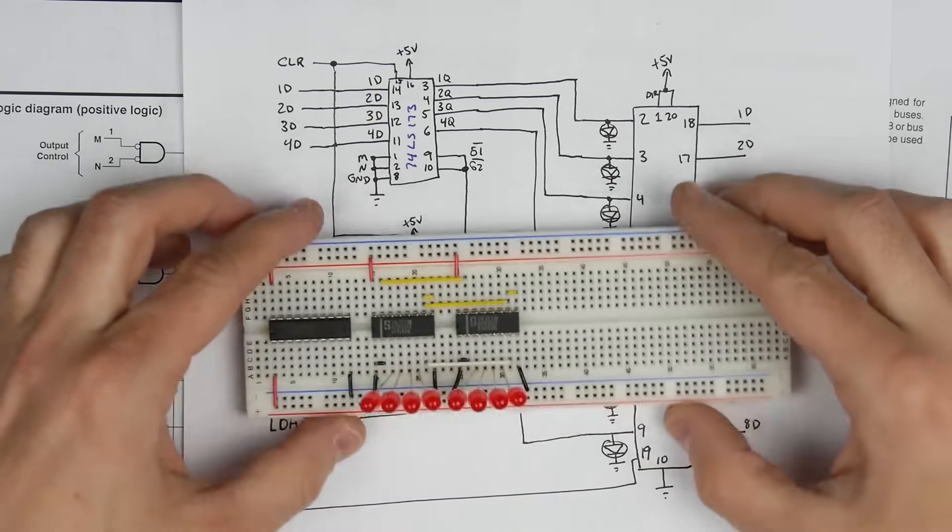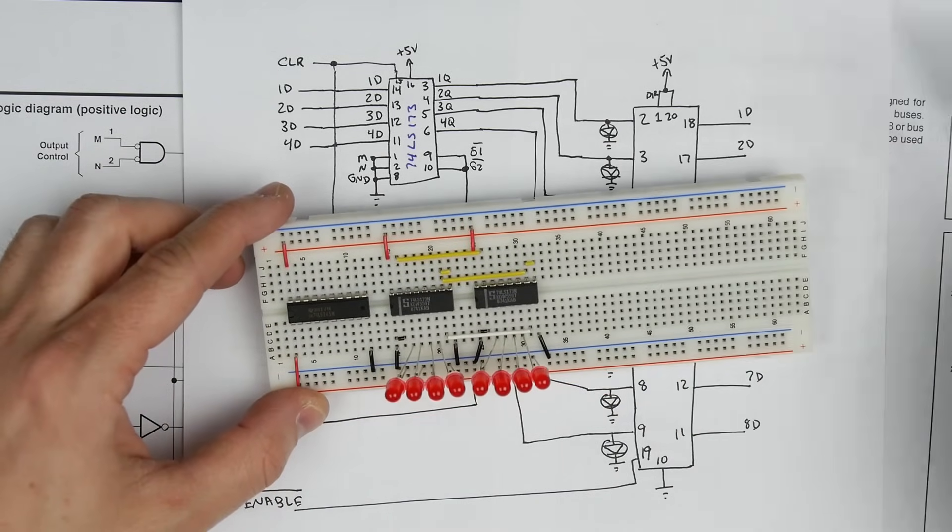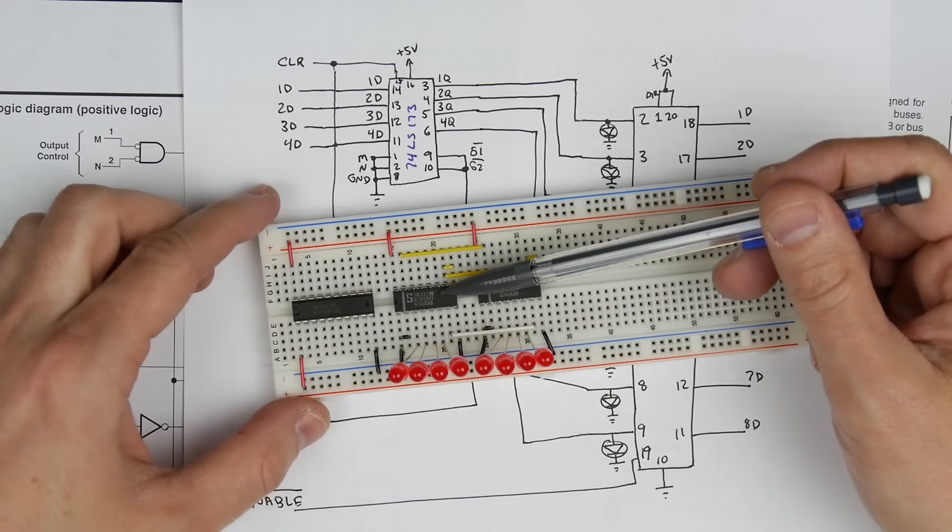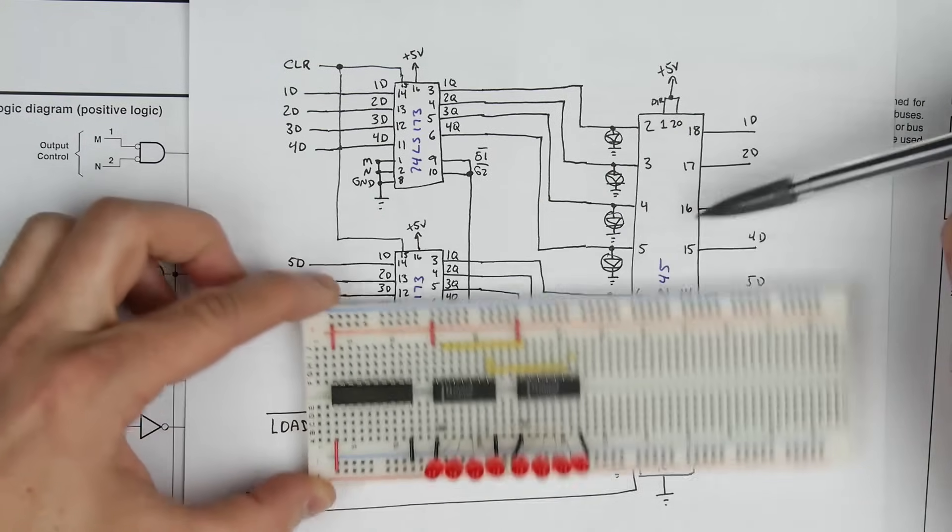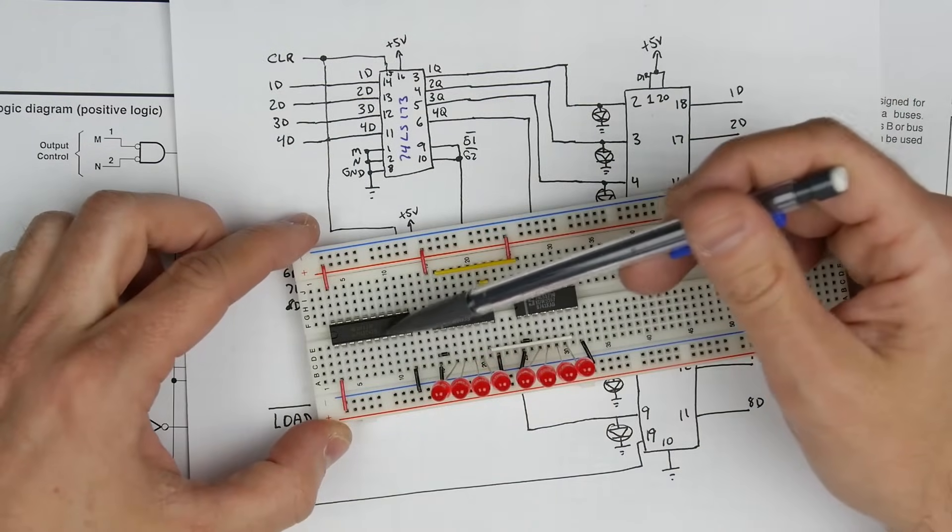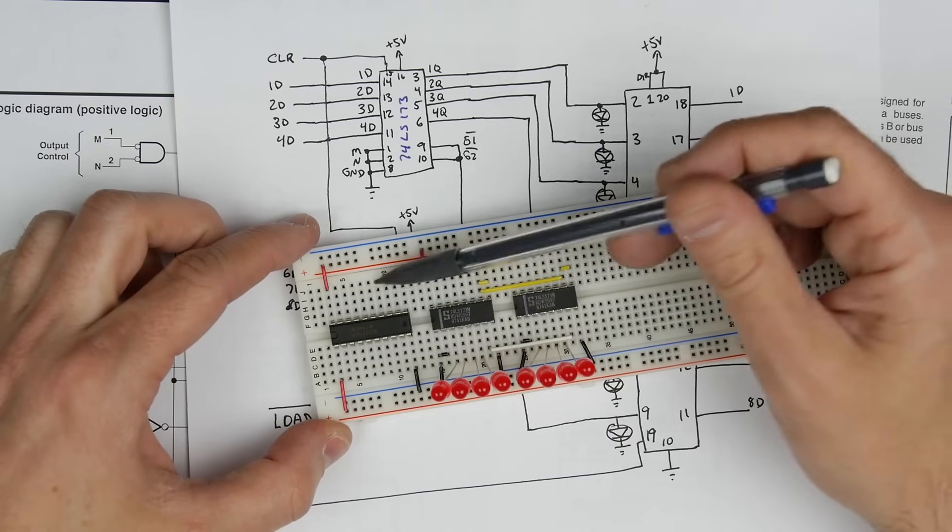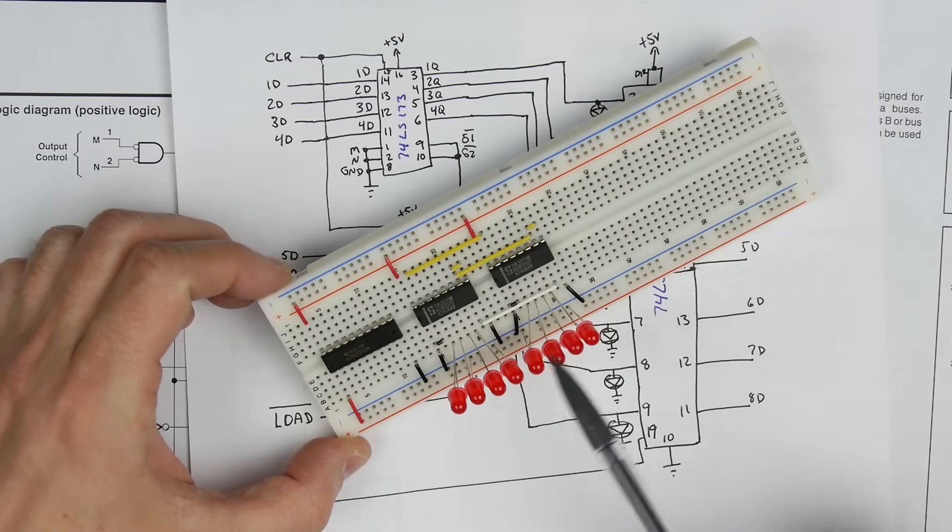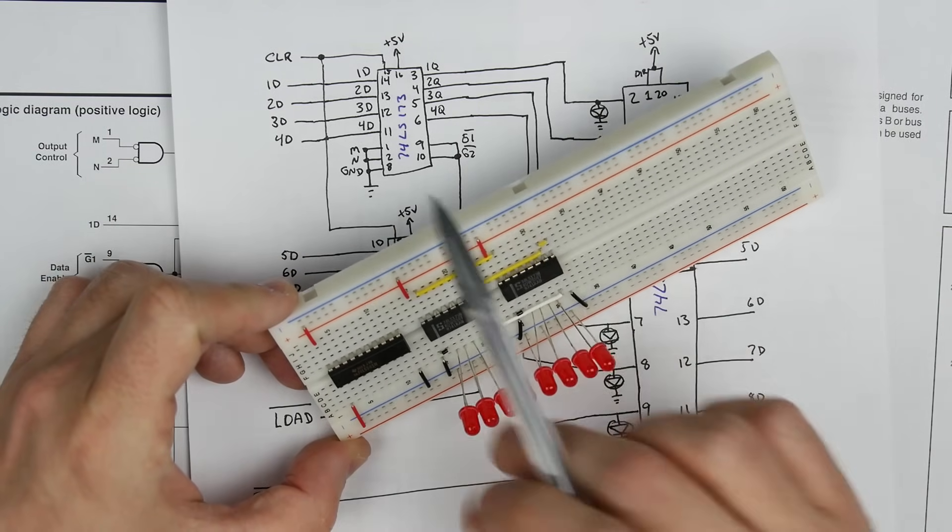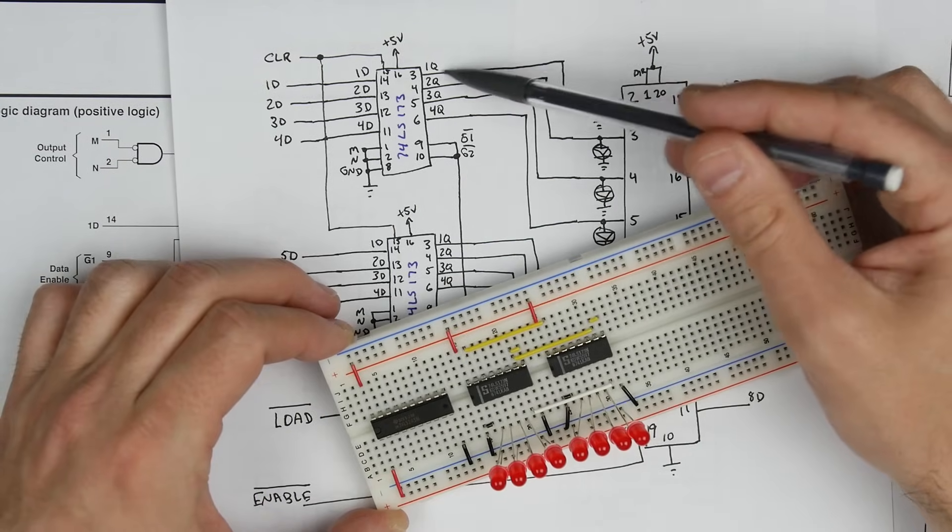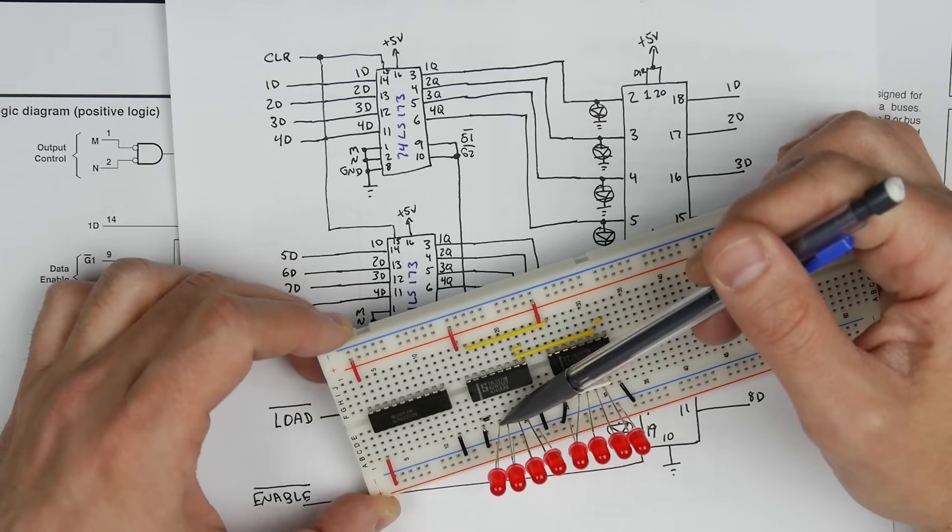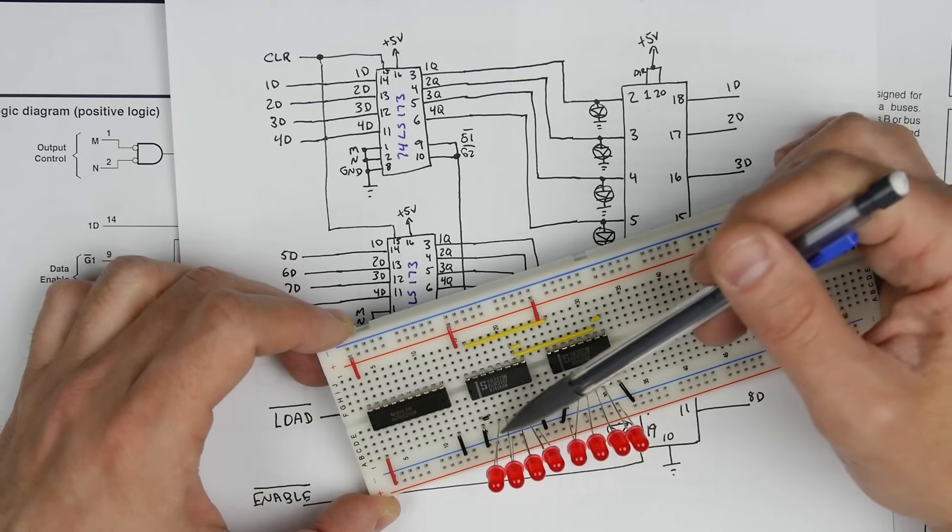So I've started to build this here. So these are the two 74LS173s. These are our register chips. And then, of course, our 74LS245 over here, which is our, which we're essentially using as the output buffer. And I've got some LEDs hooked up here, just kind of stuck in here on the outputs. So you can see pin 3, 4, 5, and 6 is connected here. I've got the LEDs there. Same thing over here.